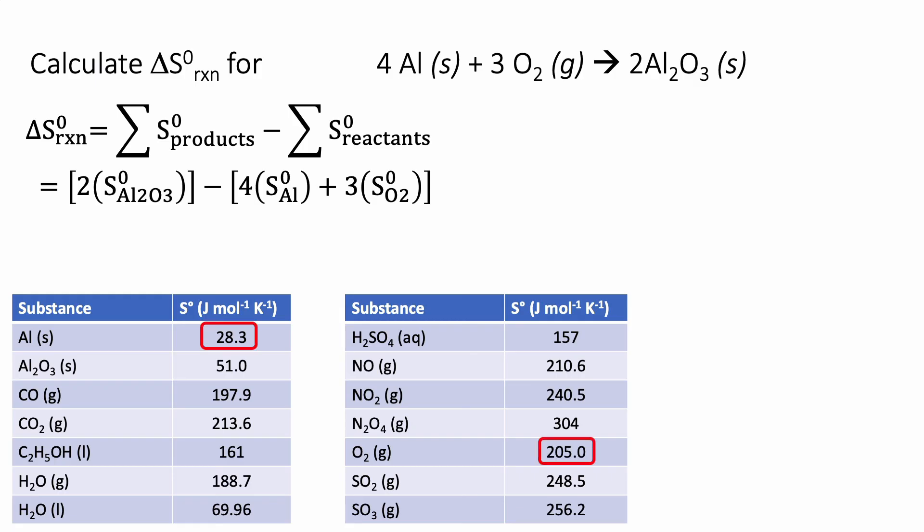Here's our aluminum, our oxygen, and our aluminum oxide. And we can plug those in. Again, remember to do everything within the brackets before you do that final subtraction. And we end up with a change of negative 626.2 joules per mole Kelvin.